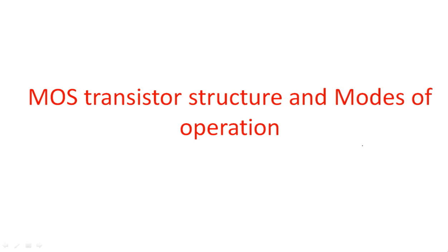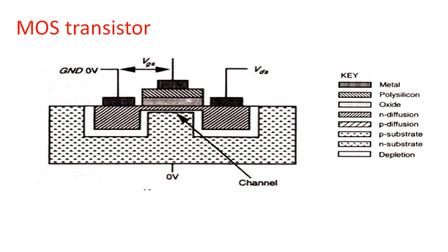In this video, I am going to introduce the structure of the MOS transistor and the different modes of operation. This is the MOS transistor structure, which consists of several layers like metal, polysilicon, oxide, N-type diffusion, P-type diffusion, P-substrate, N-substrate, and depletion. Depending on the type of transistor, we choose either a P-type substrate or N-type substrate.